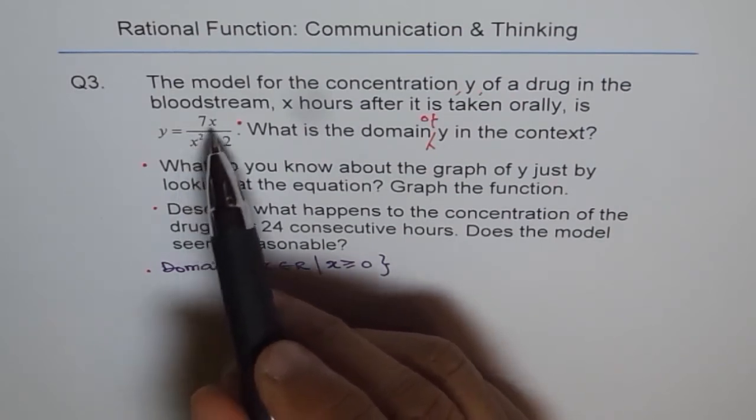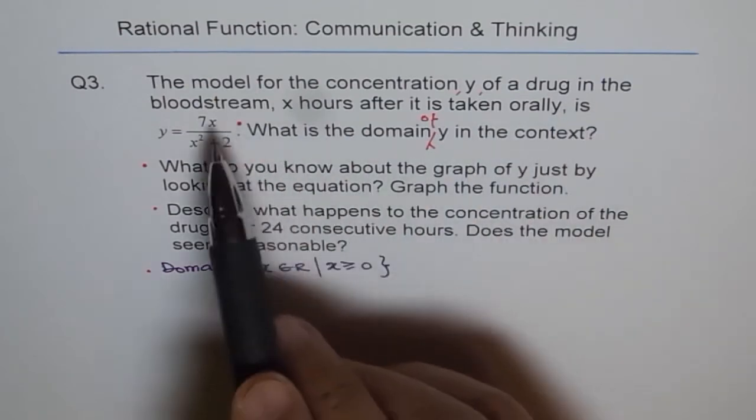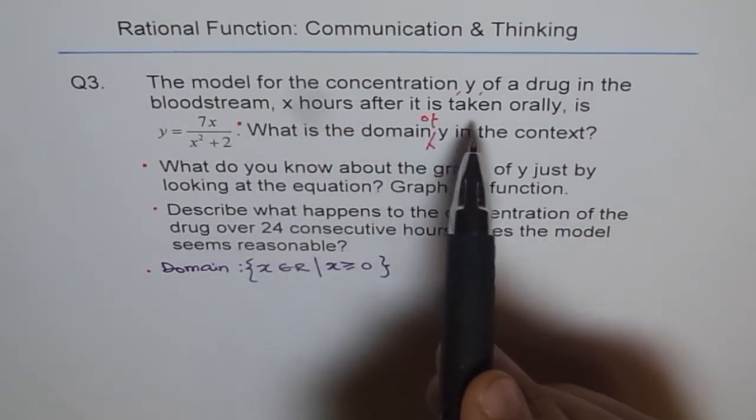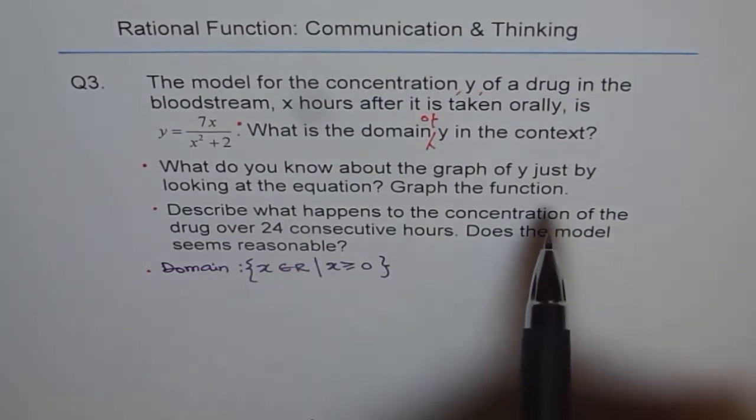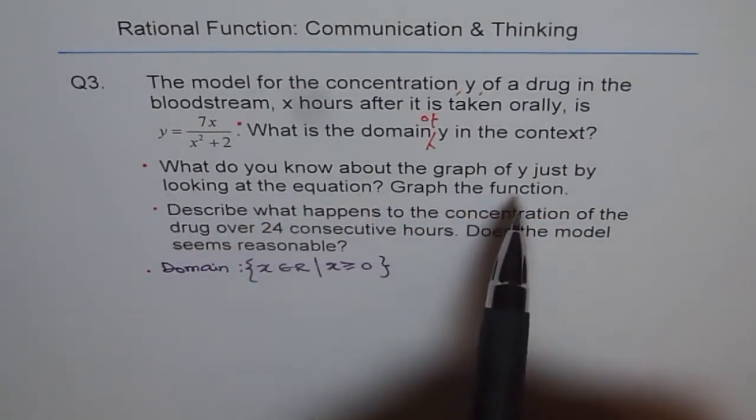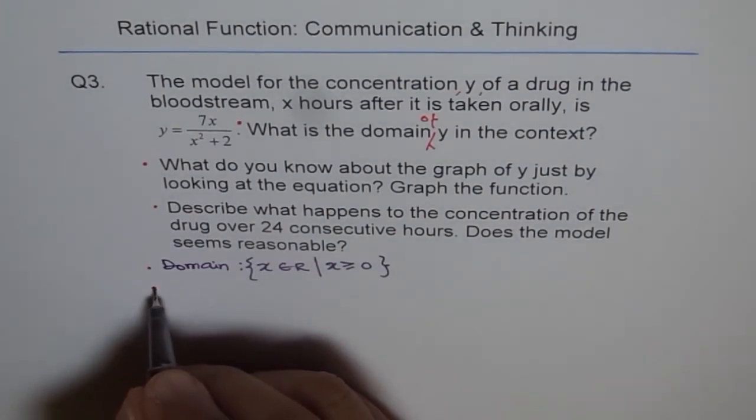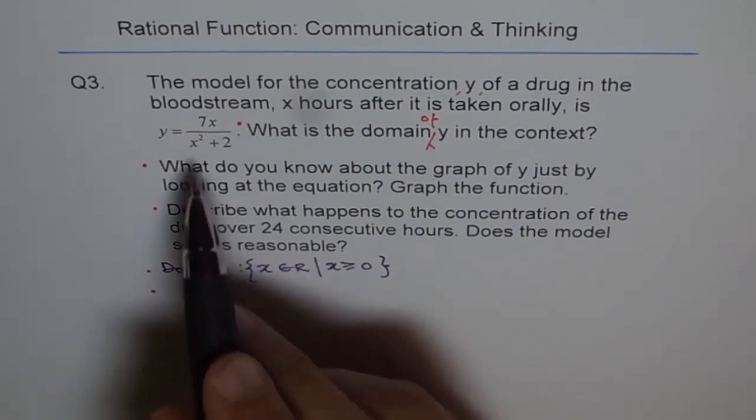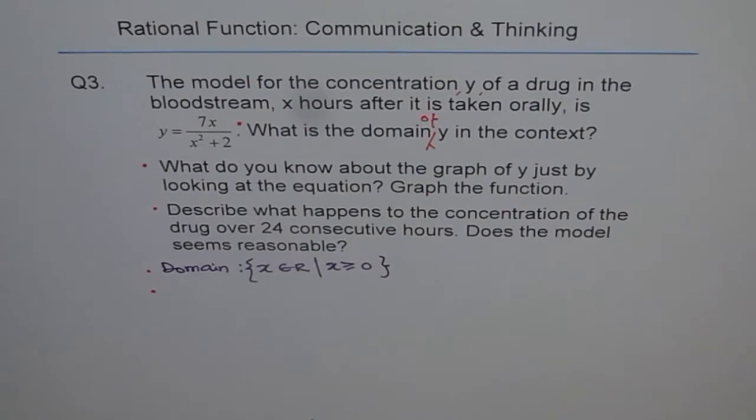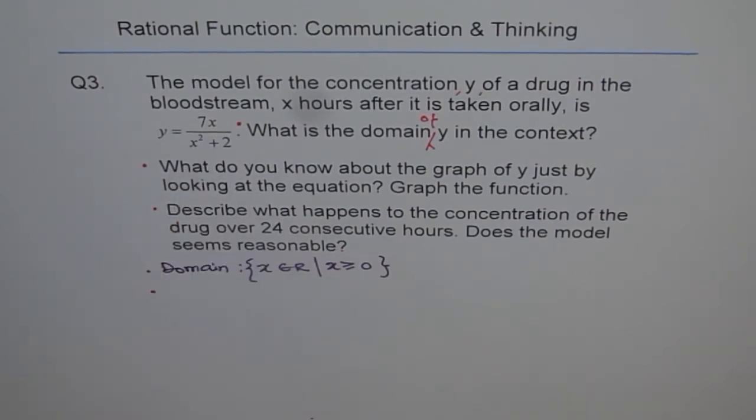Now, as soon as you take the drug according to this equation, the model for the concentration y of a drug in the bloodstream, it first increases, as you can see from the function, and then it will decrease and gradually taper off. Now, what do you know about the graph of y just by looking at the equation? Looking at this equation, you can see that since the denominator is always positive, x squared plus 2 will never be negative. It is always positive. So what we can see here is that there is no vertical asymptote here. It is a continuous graph.